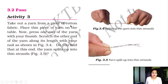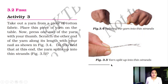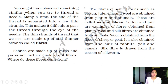Activity 3: Take out a yarn from a piece of cotton fabric. Place this piece of yarn on a table. Press one end of the yarn with your thumb, and scratch the other end along its length with your nail, as shown in figure 3.1. You will find that the yarn splits up into thin strands. You might have observed something similar when you thread a needle — many times the end of the thread separates into a few thin strands, making it difficult to pass through the eye of the needle. The thin strands of the thread that we see are made up of still thinner strands called fibers.